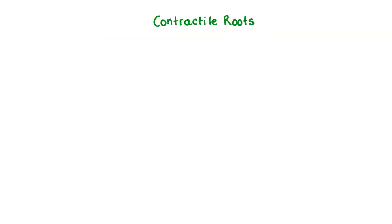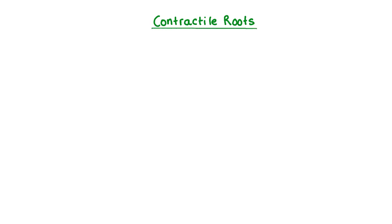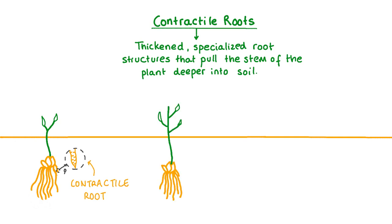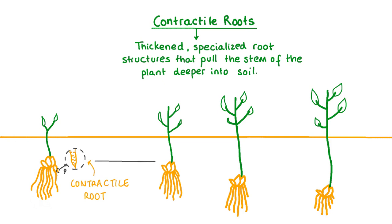Some plants like corms, bulbs, or rosettes have specialized roots called contractile roots. Contractile roots are thickened root structures capable of shrinking under harsh environmental conditions like seasonal drought. As the stem of the plant grows upwards, the shrinking of these roots exerts a strong downward pull on the stem, helping to position the plant deeper in the soil. This helps to protect the plant from damaging light and heat in drought conditions.